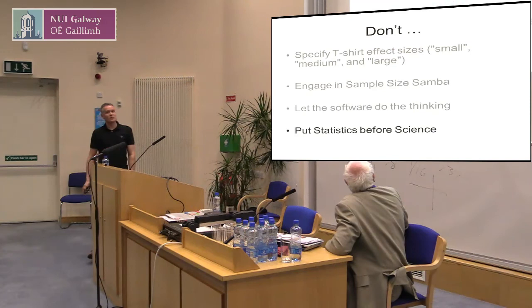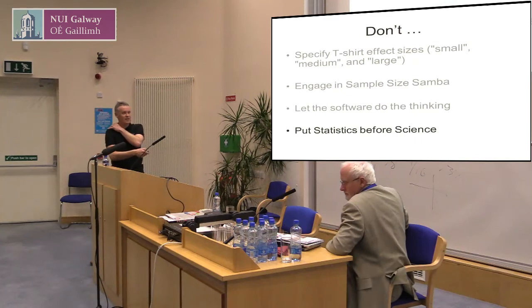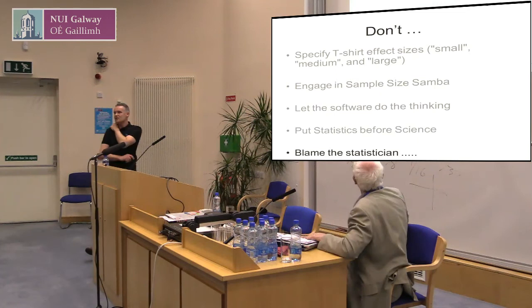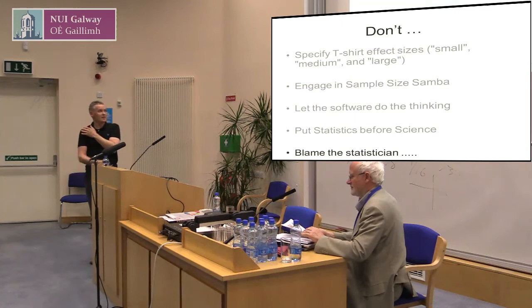Don't put statistics before science — the science comes first. Then as a consequence of the science, a statistician will help you design that study. You don't put in the values that you want that give you the sample size you think you need because that's what you can get away with. Don't blame the statistician — 'I went to see that guy and he said I needed 300 people, I can't run a trial with 300.' You said that because you came in with the trial you want to design — we're saying to do that, this is what you need.